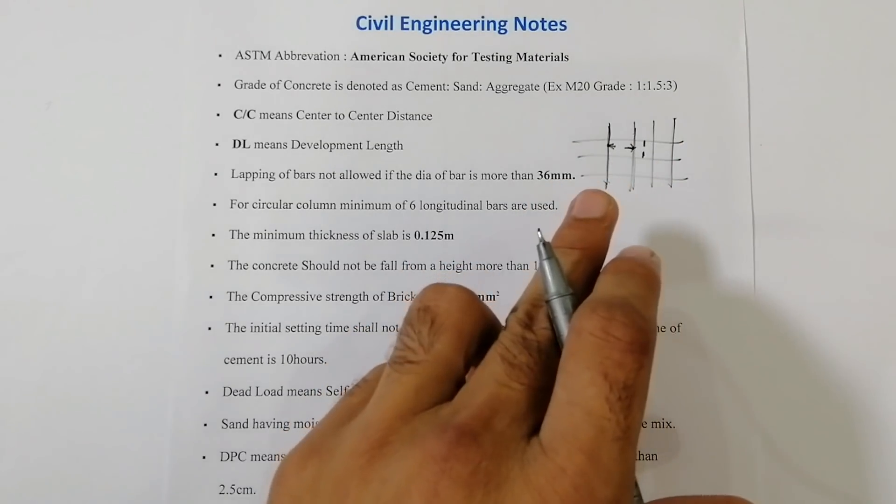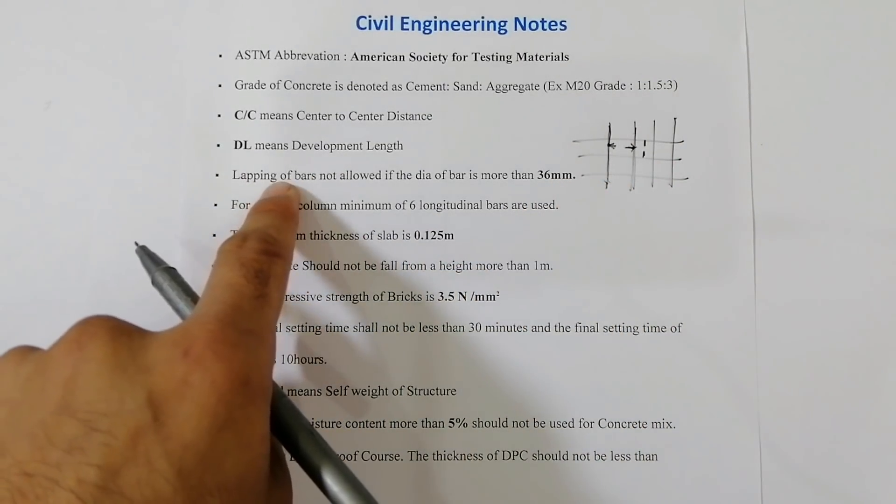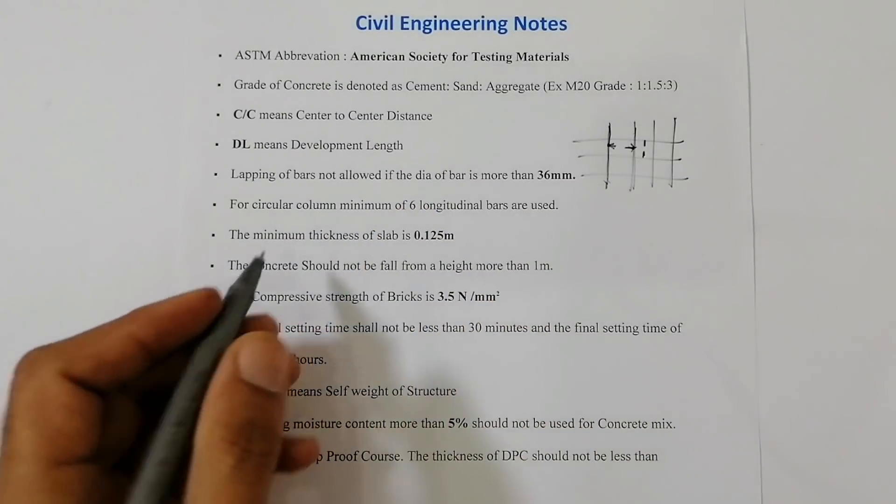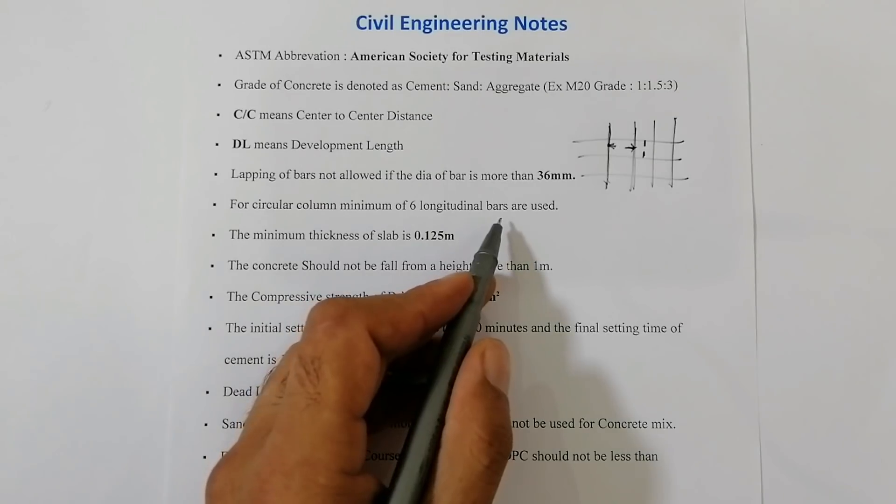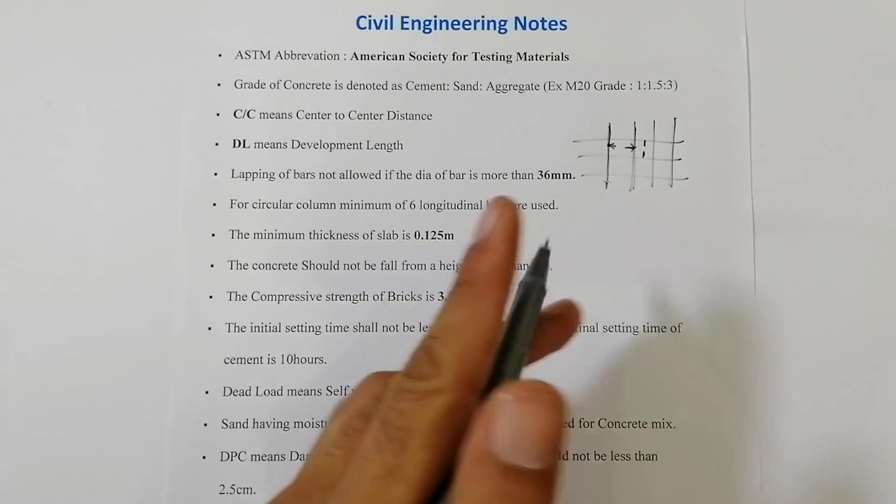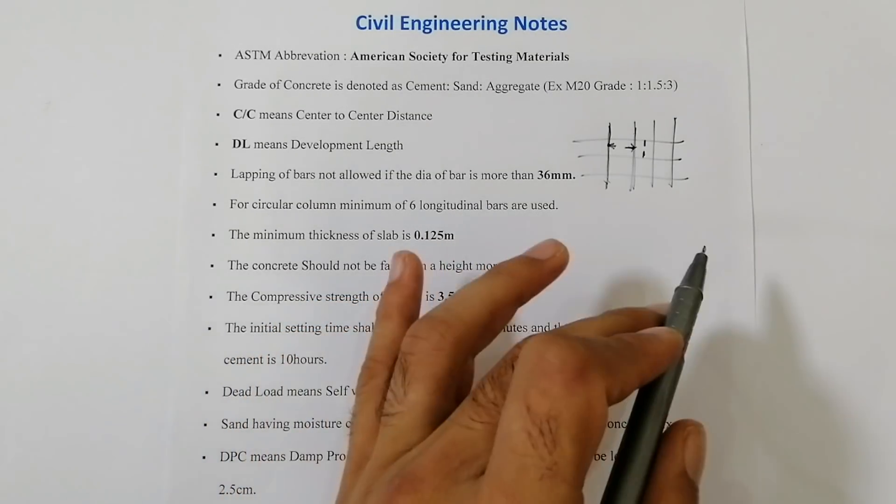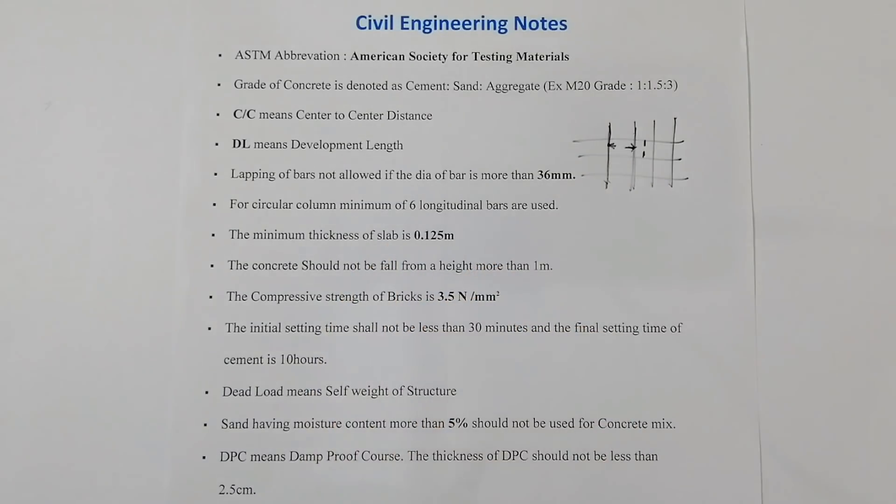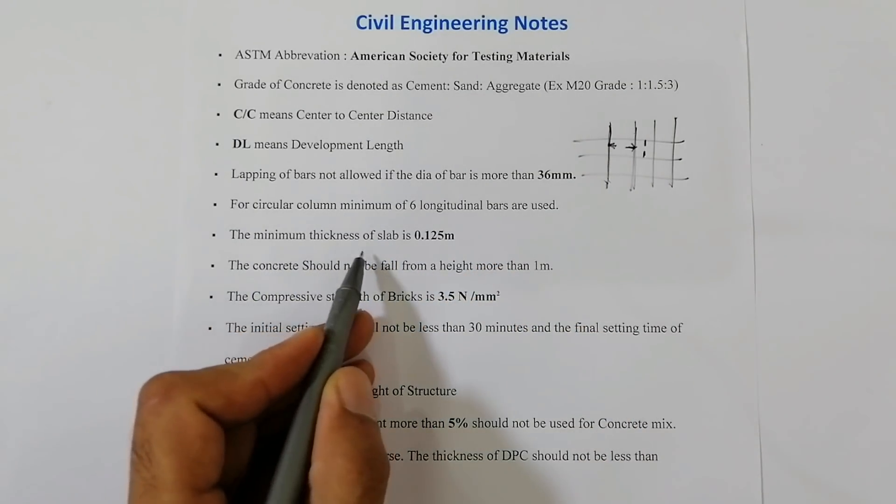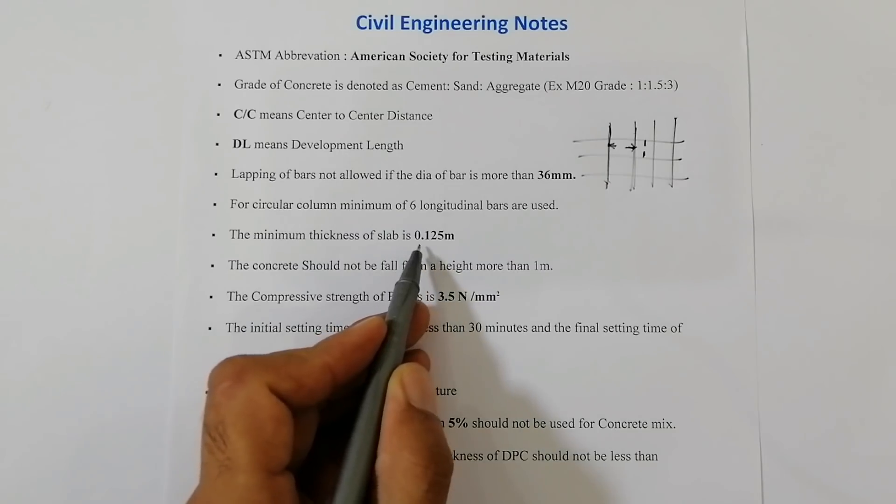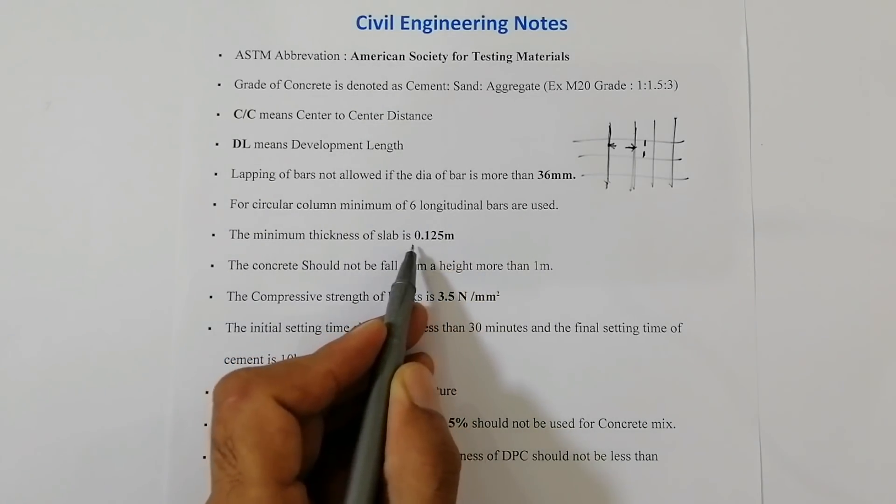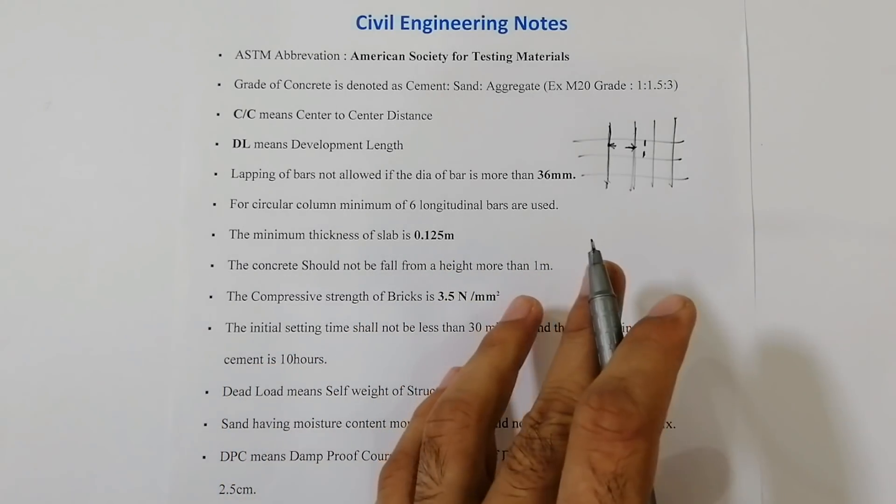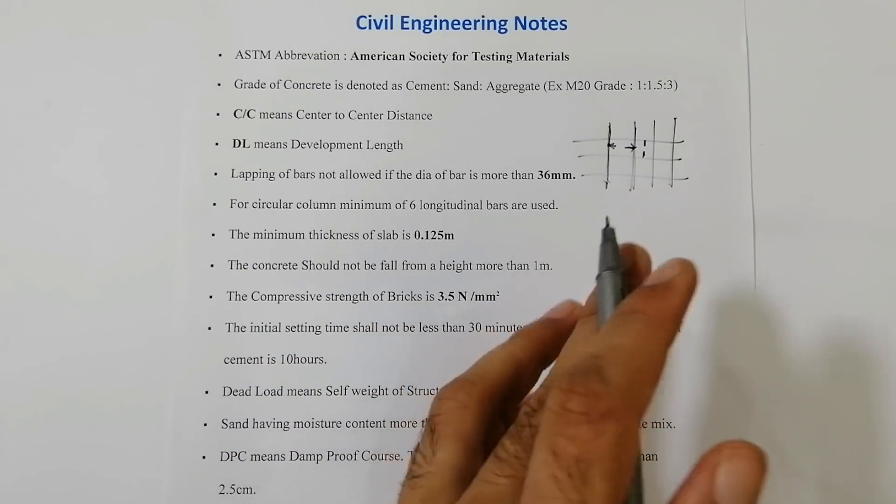For circular column, minimum of six longitudinal bars are used. The minimum thickness of RCC slab is 0.125 meter. It should not be less than 0.125 meter.